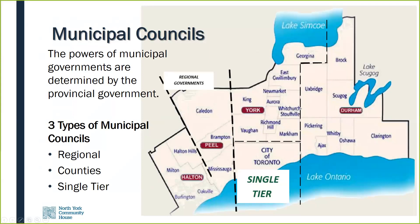The powers of municipal governments are determined by the provincial government. There are three different types of municipal government structures: regions, counties, and single tier municipalities. Some parts of Ontario have two municipal governments — a local municipal and regional government that together serve the local municipalities.